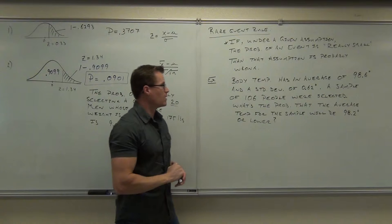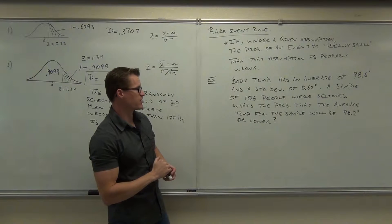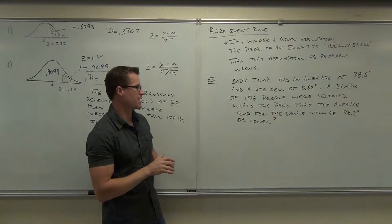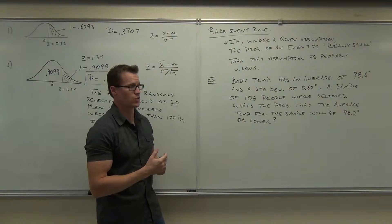So let's read through here. Body temperature has an average of 98.6, standard deviation of 0.62. A sample of 106 people were selected to find the probability that the average temperature for the sample would be 98.2 or lower.